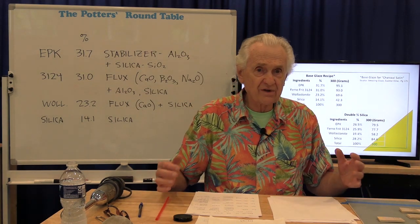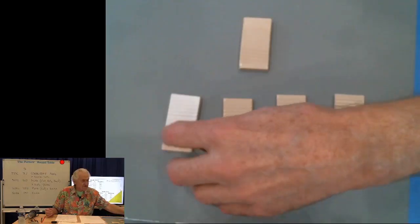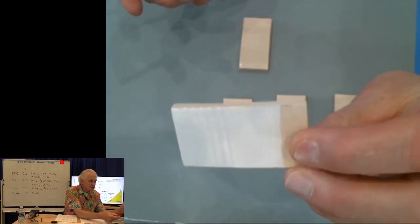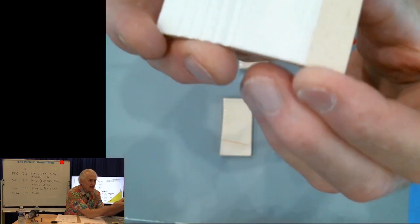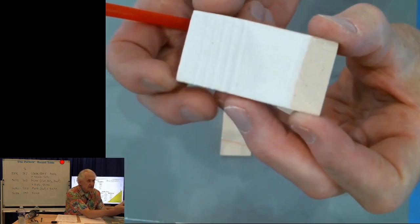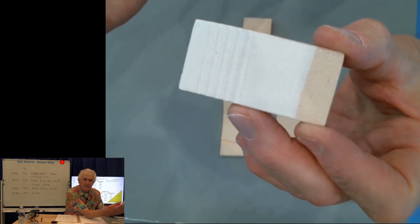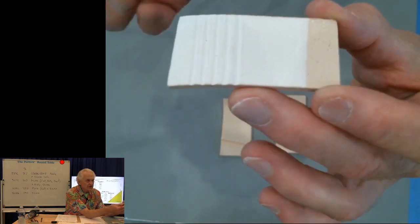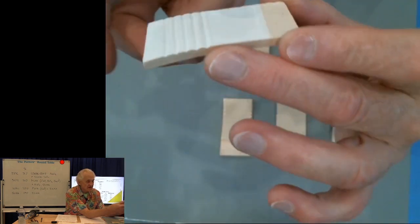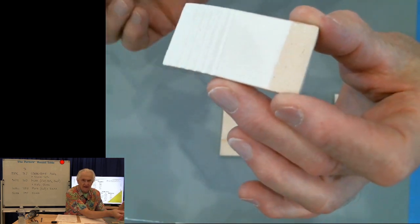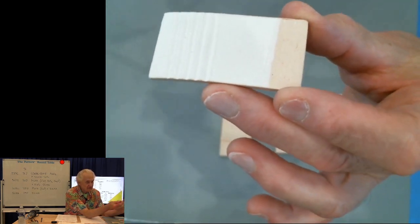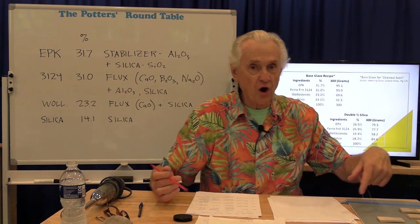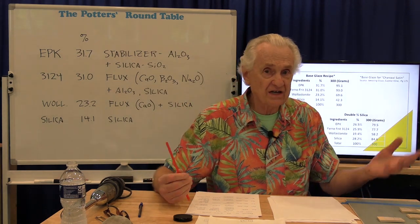The next sample is double EPK. As you can see, it's not shiny and not clear. Basically, we overloaded the glaze with clay — it couldn't all melt and be absorbed. So we have a lot of clay floating in the glaze, making it opaque, chalky-looking, completely matte. It would metal-mark badly because the surface is rough. So doubling the EPK essentially over-stabilized the glaze — we put in so much stabilizer that it couldn't even melt properly.